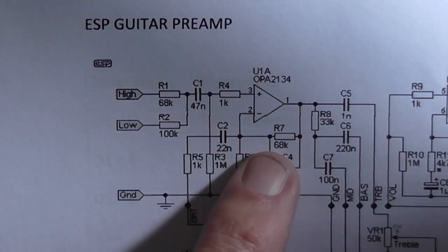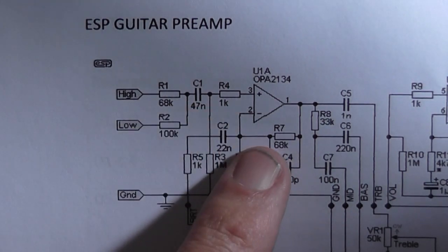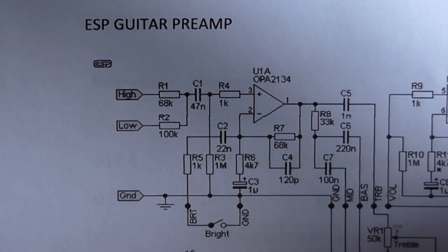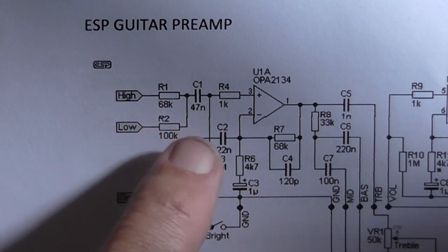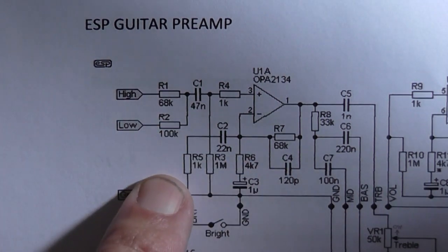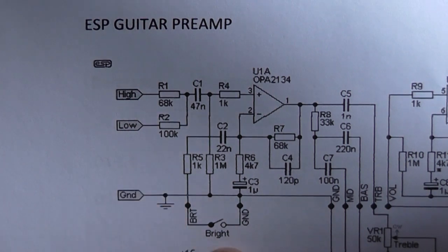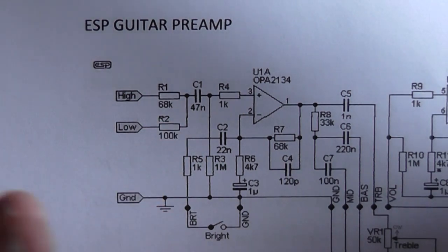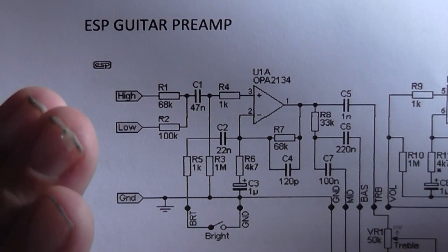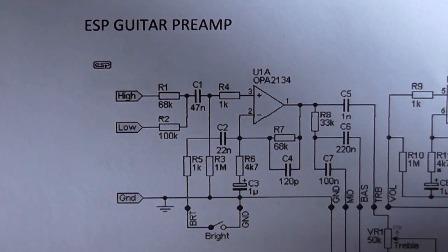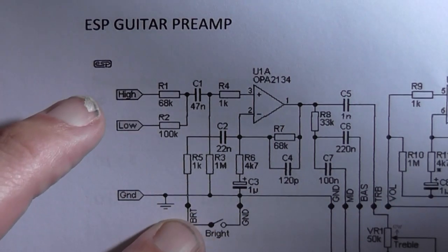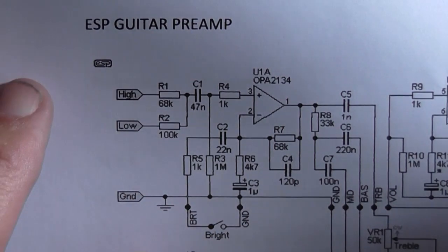That goes into a standard non-inverting op amp stage. He's got a brightness switch here switching in this 22nF capacitor and 1k resistor to ground. That's effectively adding a bit more high end to the sound, like presence on some guitar amplifiers. You can omit that if you don't want it, I'm including it.